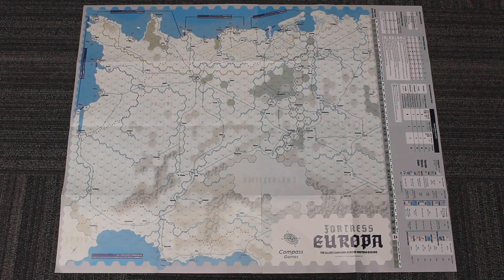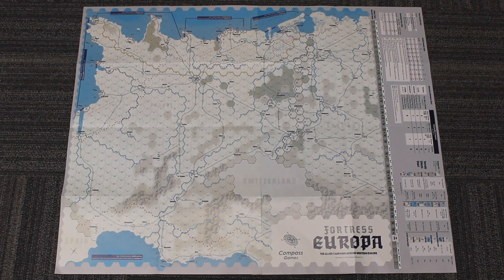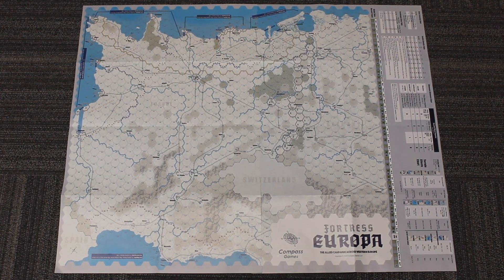Here we have both maps laid out side by side. As you can see on the right, we've included the combat results table and terrain effects chart. Overall, we've made improvements to the quality of the graphics on the entire map.